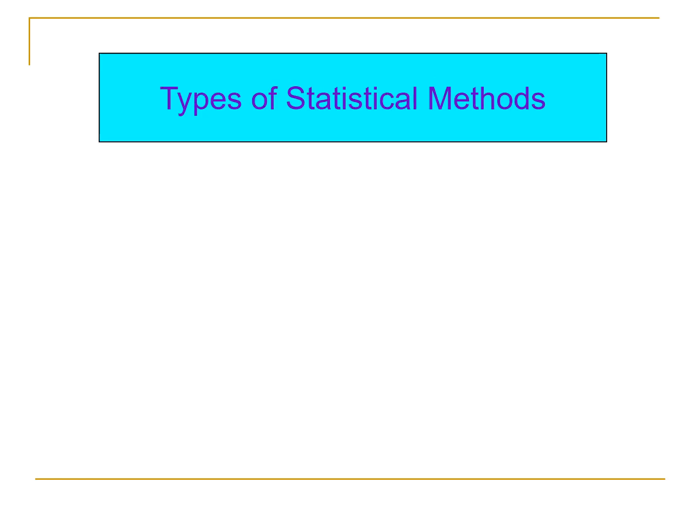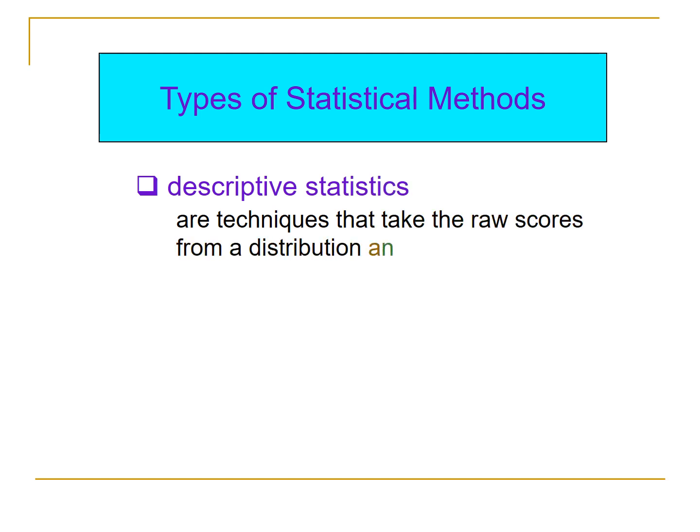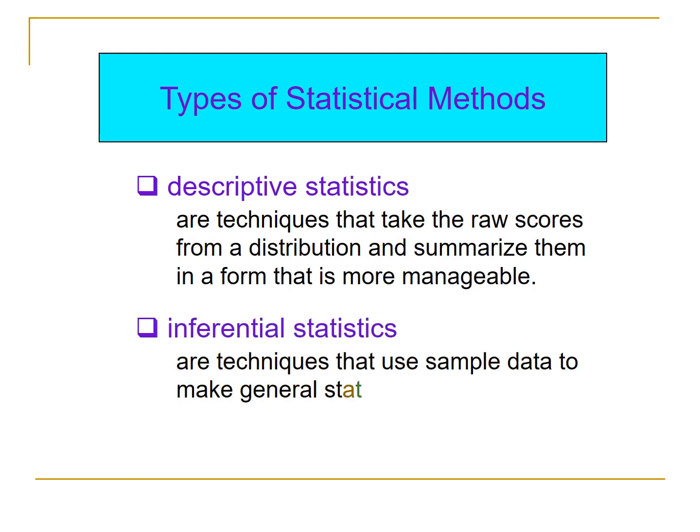There are two types of statistical methods. In other statistics books, they call it branches of statistics. These are the descriptive statistics and inferential statistics. Descriptive statistics simply describe the data or summarize them and make the data more manageable.